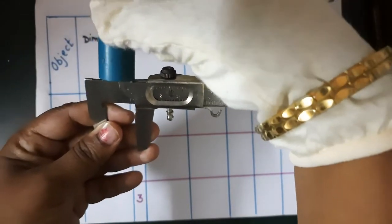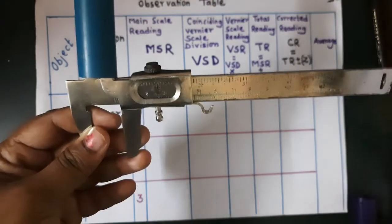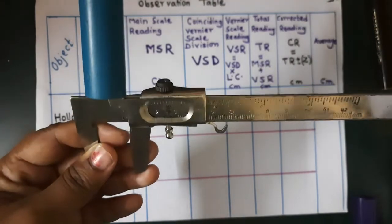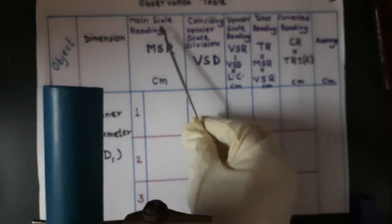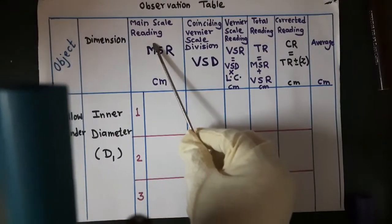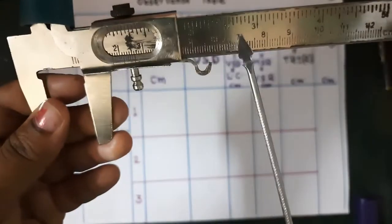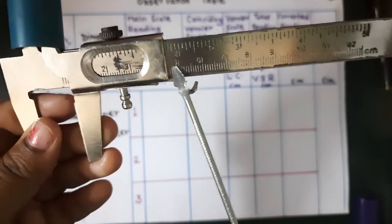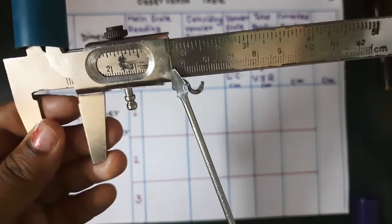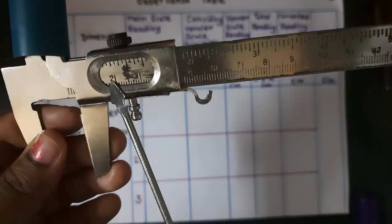The inner diameter of the hollow cylinder is determined using the upper jaws of the Vernier Caliper. Insert the object in the upper jaws. In the first column, we have to take the main scale reading — MSR. We will use the centimeter scale on this Vernier scale while taking readings. The object is fixed in the upper jaws; now see the main scale reading.